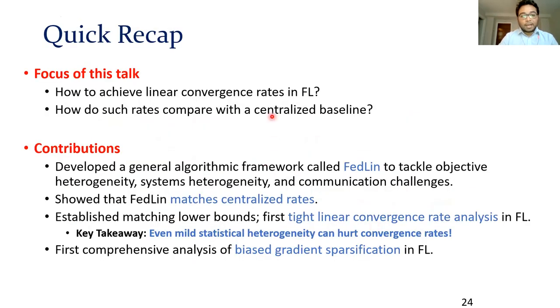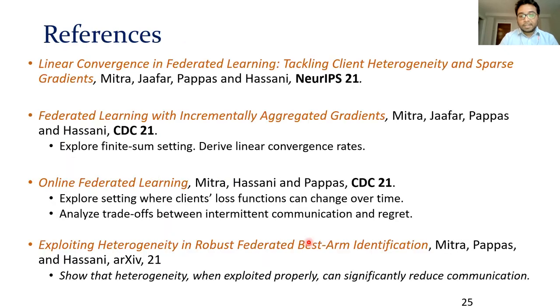To quickly wrap up, we developed a general algorithmic framework called FedLIN to tackle objective heterogeneity, systems heterogeneity, and communication challenges. We showed that it matches centralized rates. We established tight linear convergence rates for FedLIN and showed that even mild statistical heterogeneity can end up hurting. These are the references for this work. And if you're interested in knowing if statistical heterogeneity can ever help, I'll refer you to this related work. Thank you.